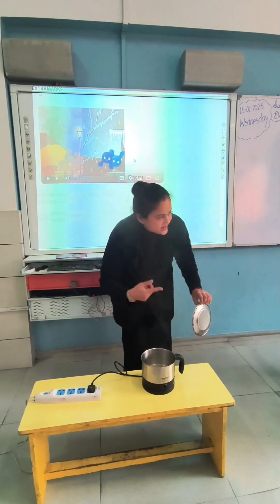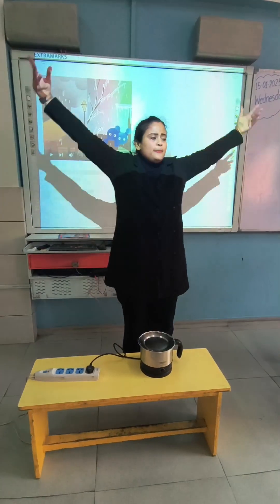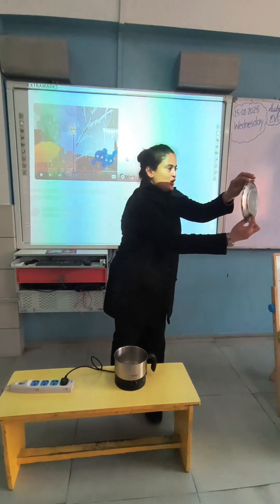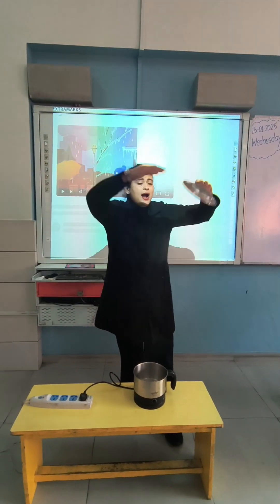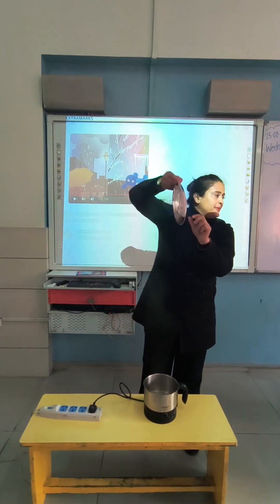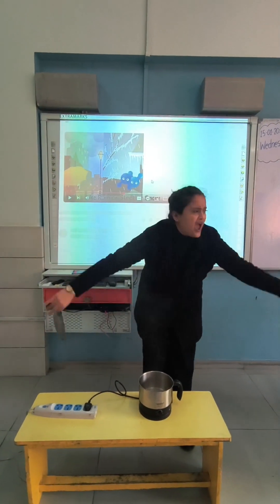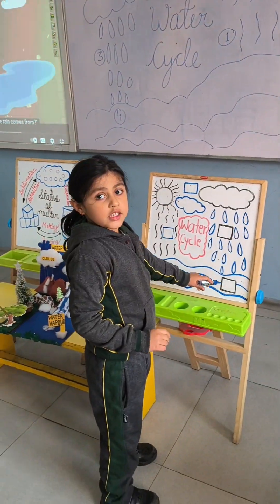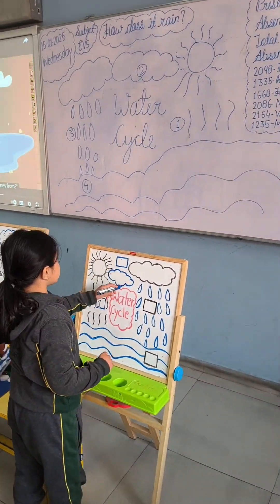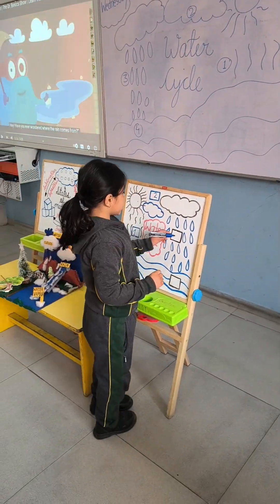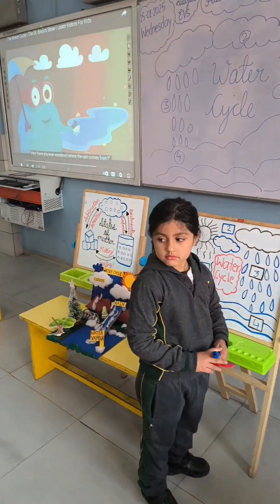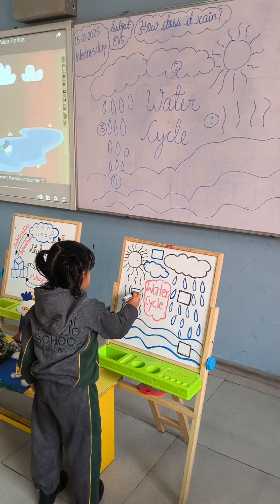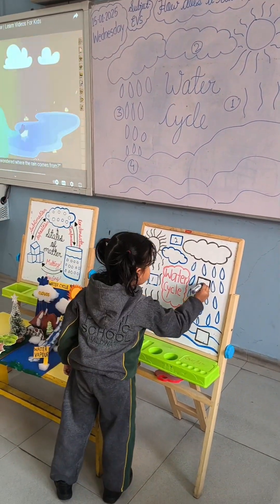Heat turns water into vapor, a gas that rises through the air, and cold makes vapor condense to liquid and fall back down everywhere. We are water molecules, and we're on an epic journey all around. It's called the water cycle, from the sea to the air to the ground.